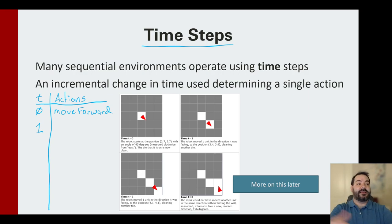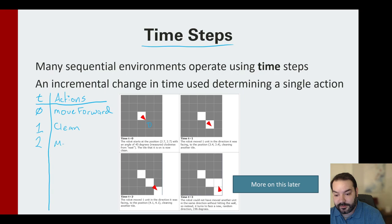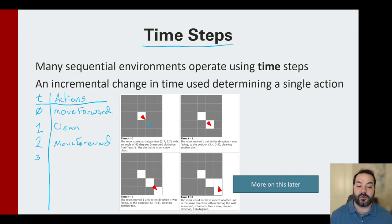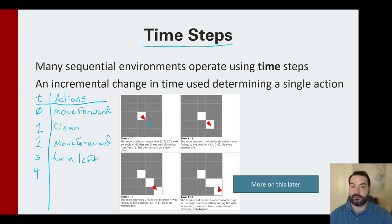At T1, the agent perceives the world around it and sees it's a little further in — it's now on a dirty tile, so it cleans it. Then it moves forward again. At T3, it can't move forward anymore, so rather than move forward, it turns left. Then T4, T5 — each one of these time steps comes into play.